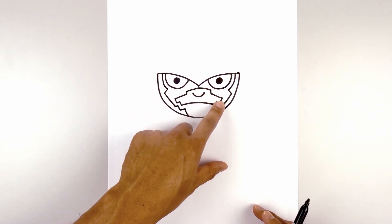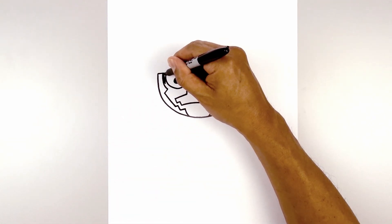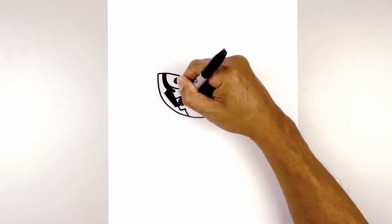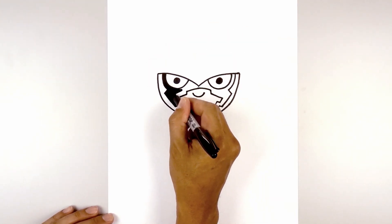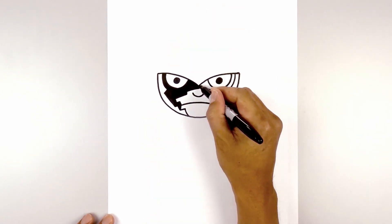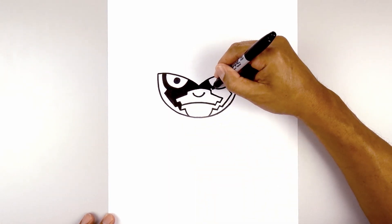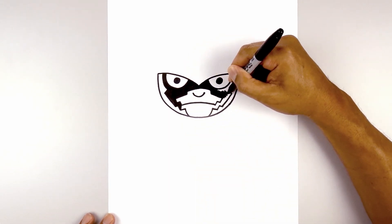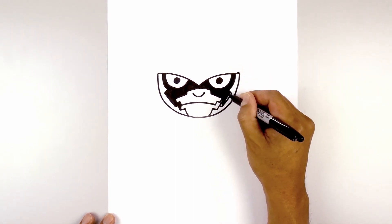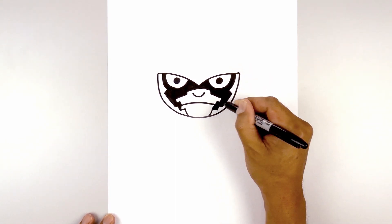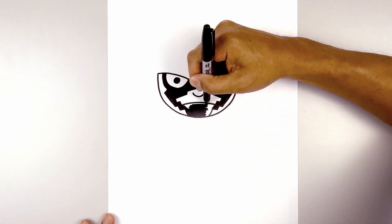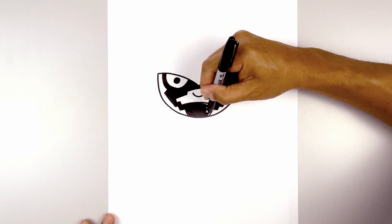Now we're going to go ahead and fill that inside detail in black. We're going to move on to the right side of the chin.